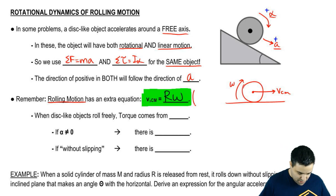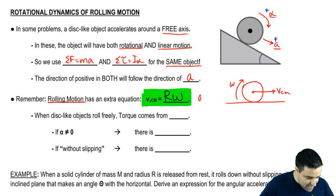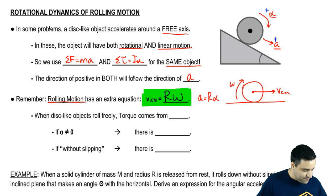Another equation that's also possible, just like V equals big R omega, is A equals big R alpha.